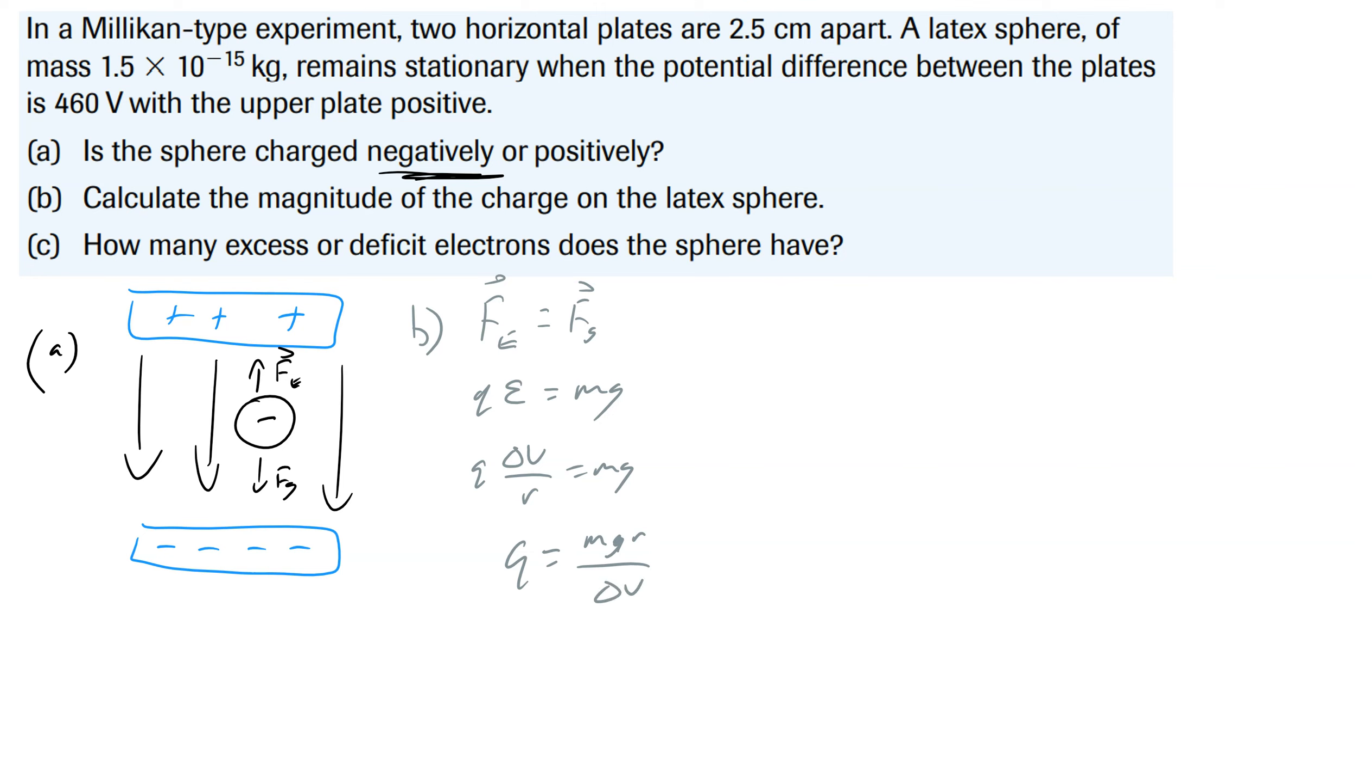And I've got all this information right here. We know the mass is 1.5 times 10 to the negative 15, 9.8, we have 0.025, and our voltage is 460. And when we go ahead and we plug this into our calculator we get a value of 8 times 10 to the negative 19 coulombs.